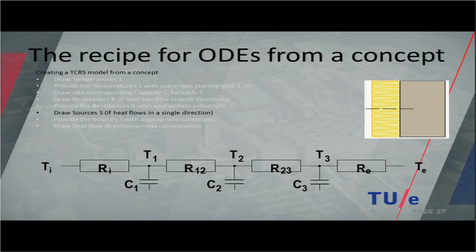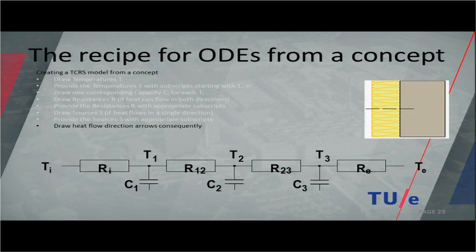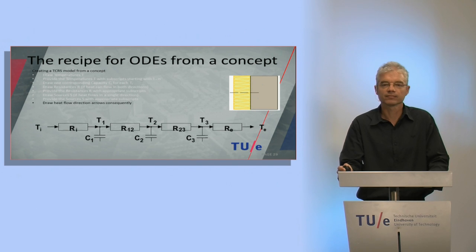The next step would be to provide sources, but in this example we don't have a source, so that's skipped. You can see other web lectures where we do have sources. Finally, we draw the arrows for the heat flow. I assume the indoor temperature Ti is the highest and Te in winter is the lowest, so heat flow goes from Ti to Te. This finalizes the first part of the recipe.